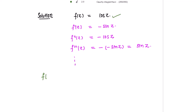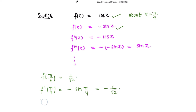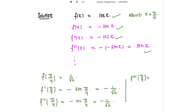Now finding the values at z = a = π/4. f(π/4) = cos(π/4) = 1/√2. The second derivative at π/4 is -cos(π/4) = -1/√2. The third derivative at π/4 is sin(π/4) = 1/√2.